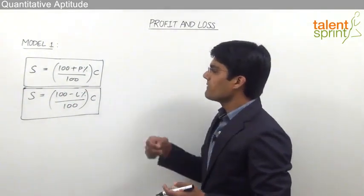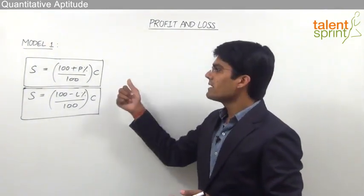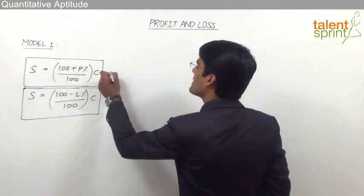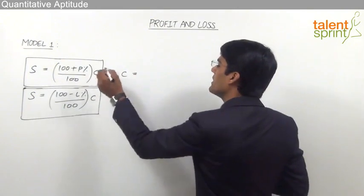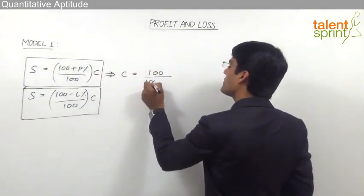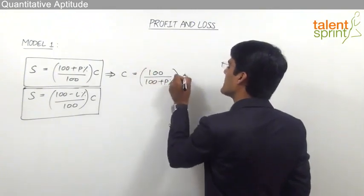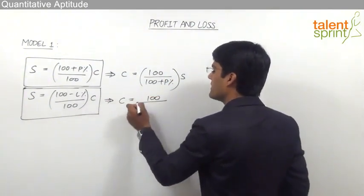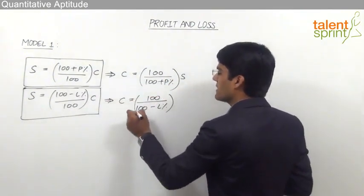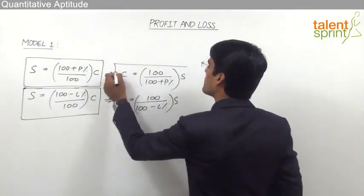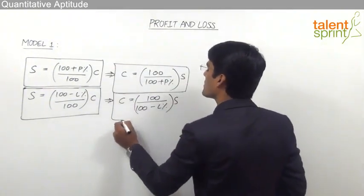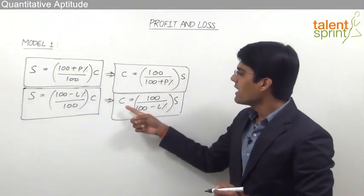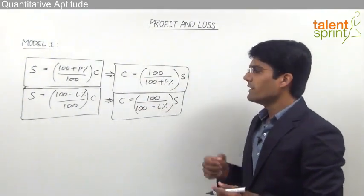Similarly, from this formula we can find out the cost price when the selling price and profit percentage, or the selling price and loss percentage, are given to us. Cost price C = 100 / (100 + profit%) × S, and cost price C = 100 / (100 − loss%) × S. So this is the formula for cost price when the profit percentage and the loss percentage are given.